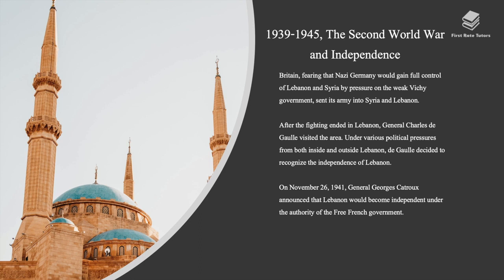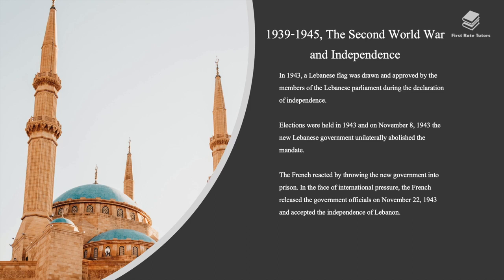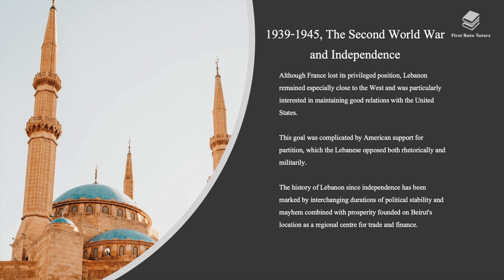On November 26th, 1941, General Georges Catroux announced that Lebanon would become independent under the authority of the Free French government. In 1943, a Lebanese flag was drawn and approved by members of the Lebanese parliament during the Declaration of Independence. Elections were held in 1943 and the new Lebanese government unilaterally abolished the mandate. The French reacted by throwing the new government into prison. In the face of international pressure, the French released the government officials on November 22nd, 1943 and accepted the independence of Lebanon. Although France lost its privileged position, Lebanon remained especially close to the West and was particularly interested in maintaining good relations with the United States.